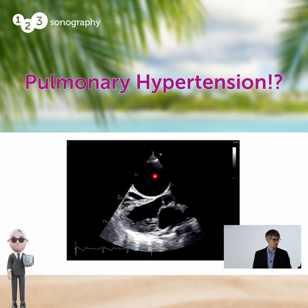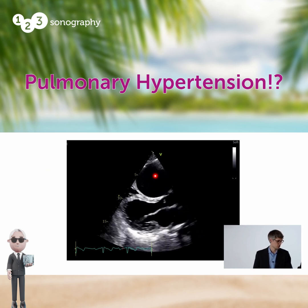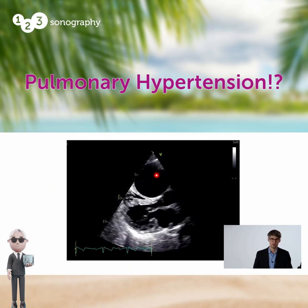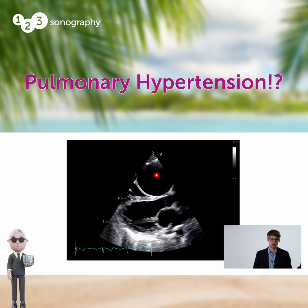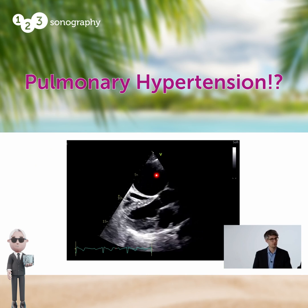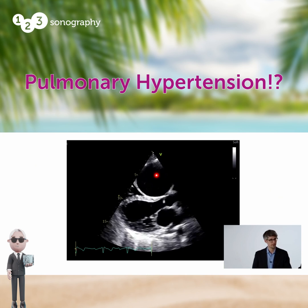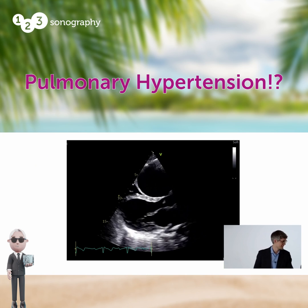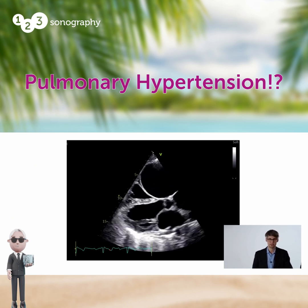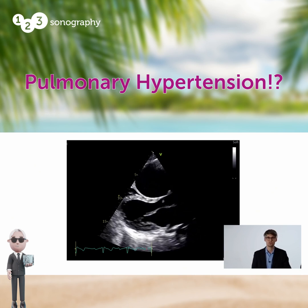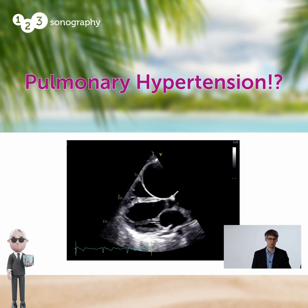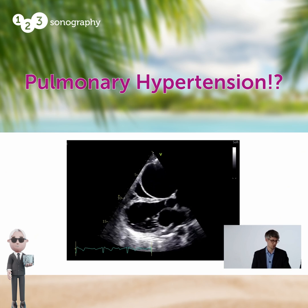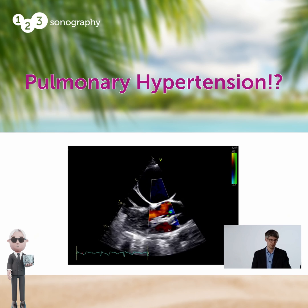First, this looks like significant pulmonary hypertension with a very large right heart, with the only problem that this right heart is not really contracting at all. Basically you see a large, round structure on top of the left ventricle really pressing onto the aorta.